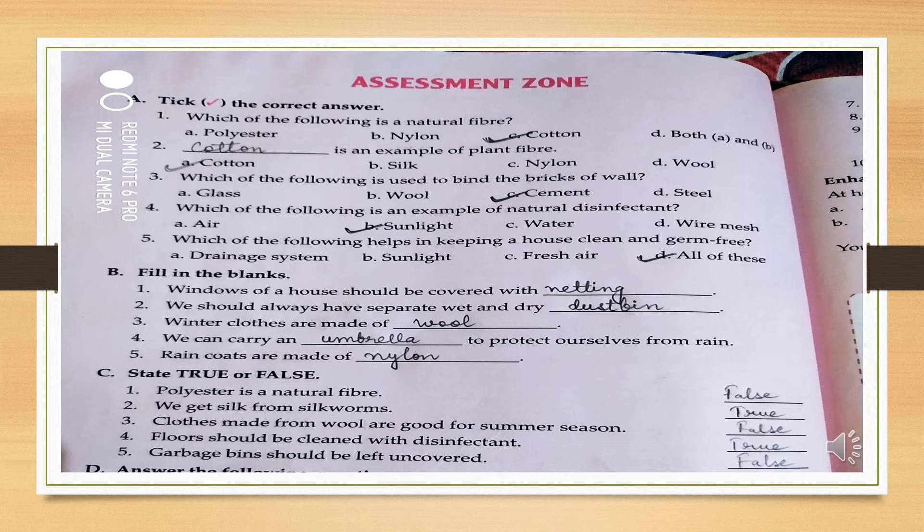Second question: dash is an example of plant fiber. The options are cotton, silk, nylon, wool. The answer is cotton - cotton is an example of plant fiber. Next question: which of the following is used to bind the bricks of a wall? The options are glass, wool, cement, and steel.